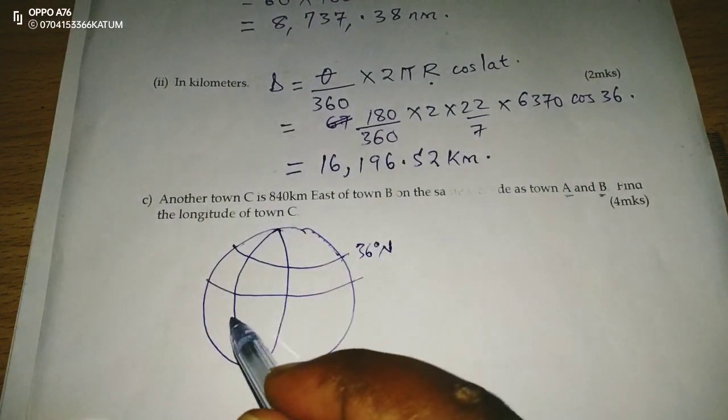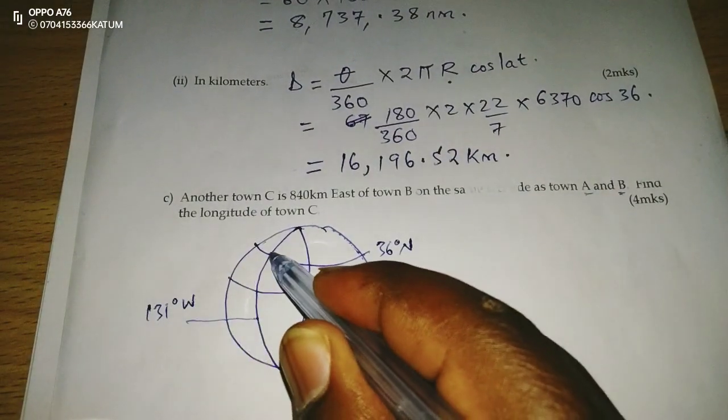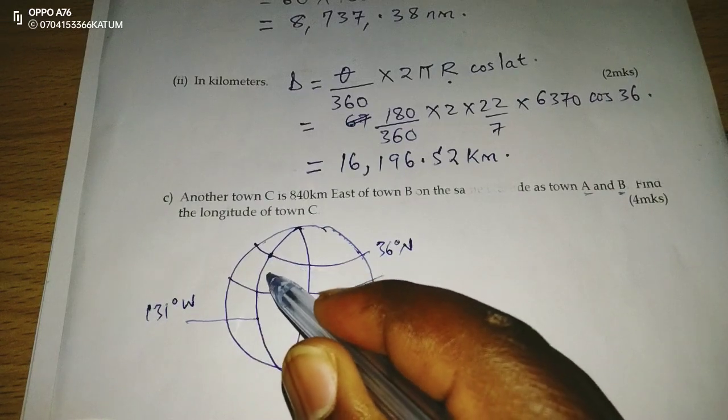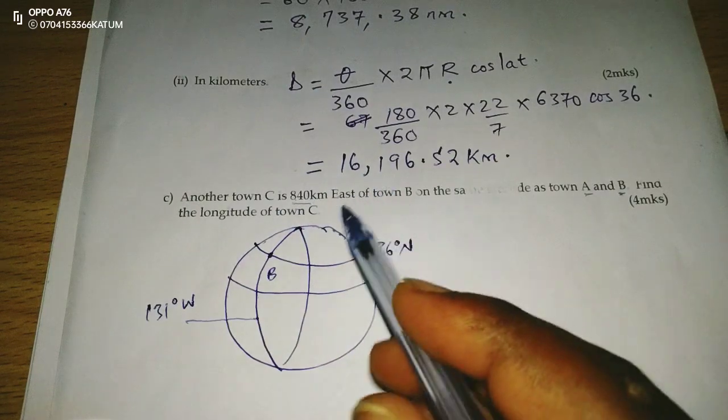B is on longitude 131 degrees west. This is where B is. Then we are told now town C is 840 east of B,